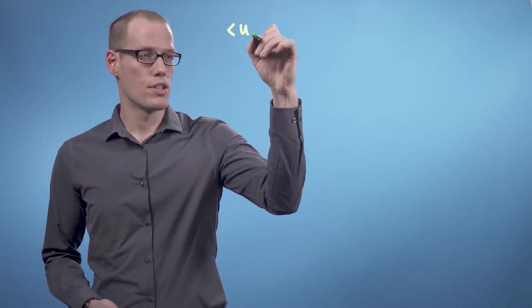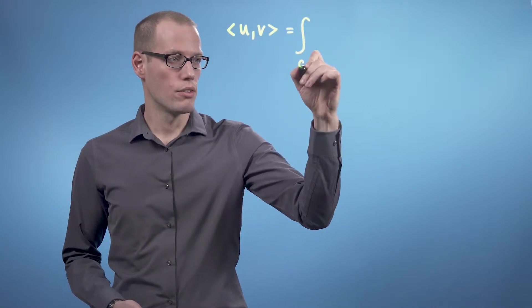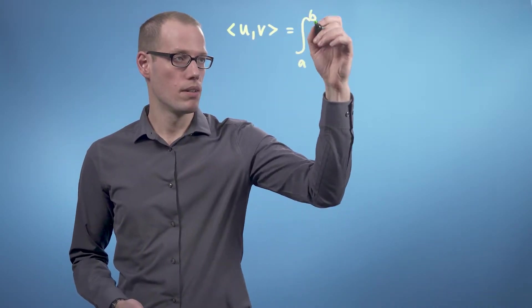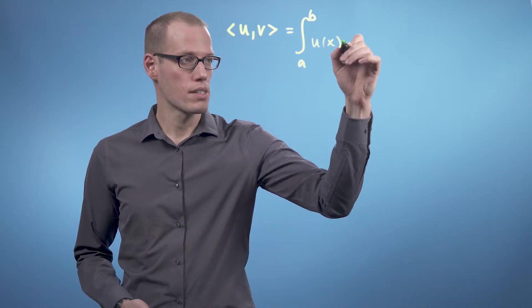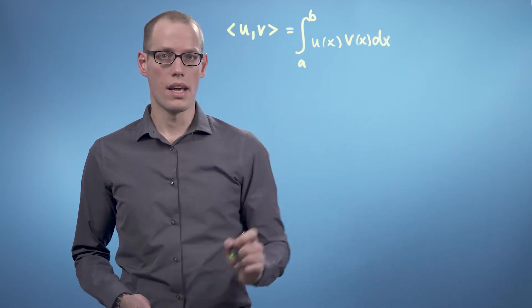The inner product between two functions is defined as follows: the inner product between two functions u and v is the integral over an interval from a to b of u(x) times v(x) dx.